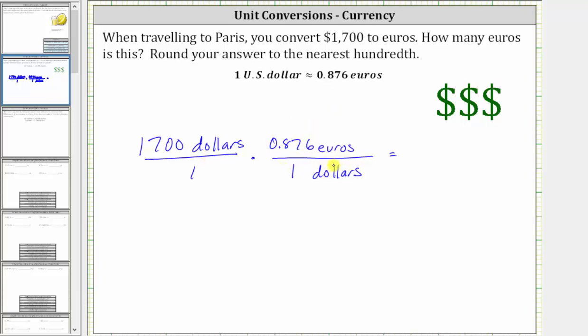Notice how by multiplying by this unit fraction, the units of dollars will simplify out because we have dollars divided by dollars. Notice now we're left with the units of euros.